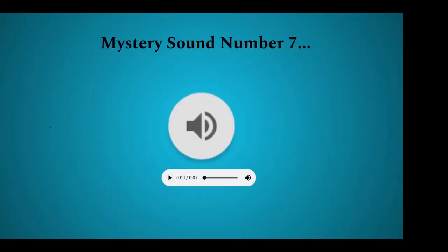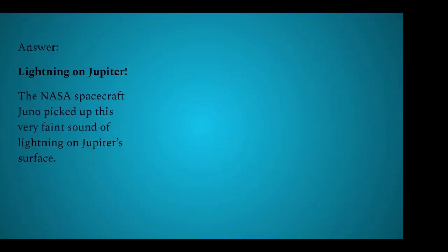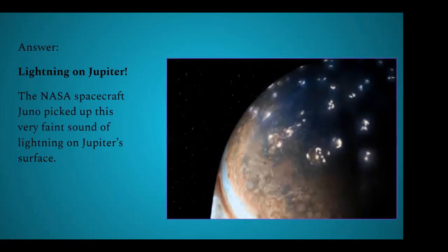And here is our last mystery sound. This sound, if not a bit muffled, is lightning on Jupiter. Did you know that lightning could strike on many different planets? It's not just Earth. The NASA spacecraft Juno picked up this very faint sound of lightning on Jupiter's surface. Now how this happens on Jupiter's surface is still somewhat of a mystery to researchers, but it's interesting to know that lightning is not just a phenomenon on our planet.